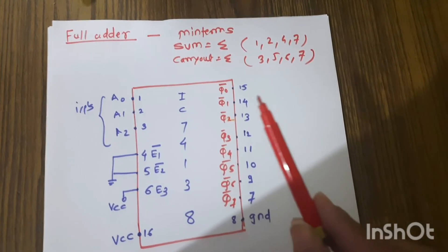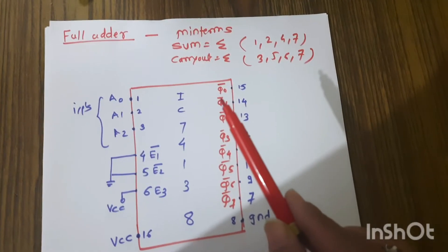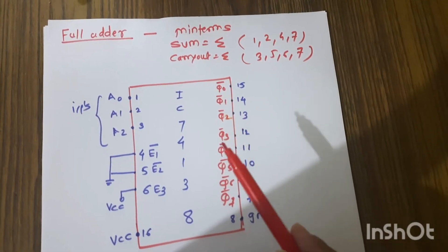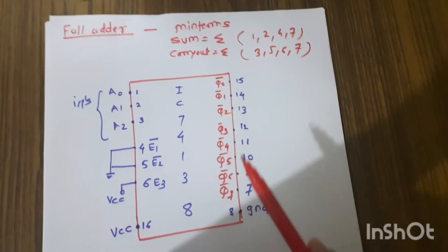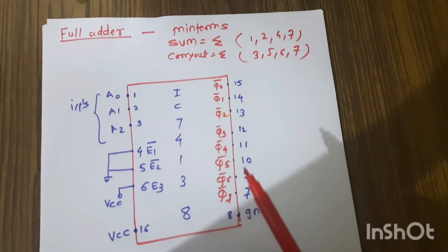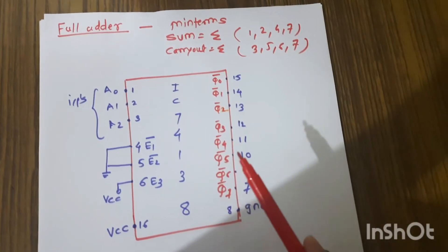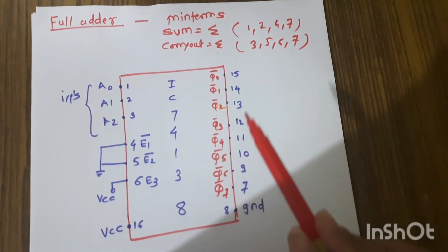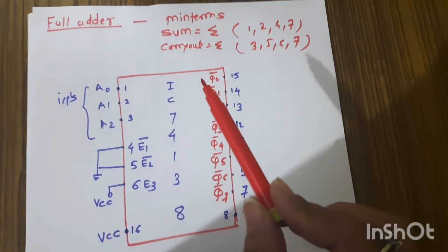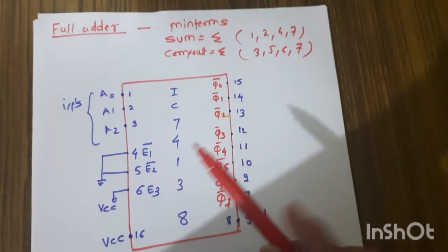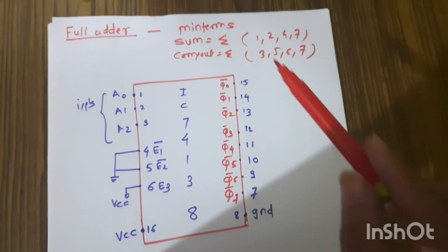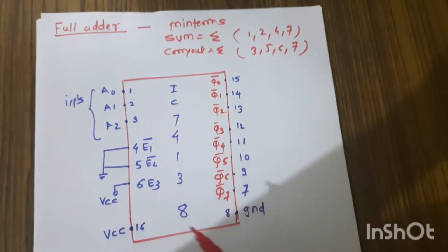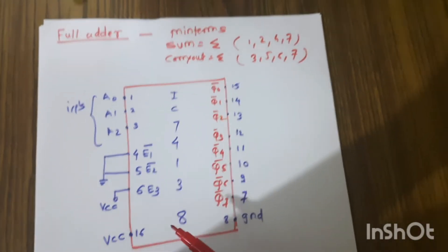From pin numbers 15, 14, 13, 12, 11, 10, 9, 7 — these are the output pins. The outputs are Q0-bar, Q1-bar, Q2-bar, Q3-bar, up to Q7-bar. These are active low outputs, as indicated by the bar notation.